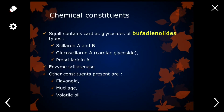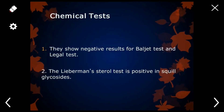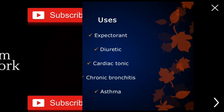Squill also contains enzymes like scillatinase, and other constituents include flavonoids, mucilages, and volatile oils. This is the structure of a glycoside present in squill. For chemical identification, squill glycosides show negative results for the Baljet test and Legal test, while they show positive results for the Liebermann-Burchard test. Squill is used as an expectorant, diuretic, and cardiac tonic, and to treat chronic bronchitis and asthma.